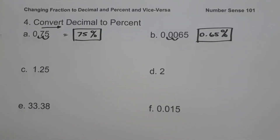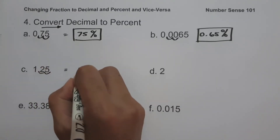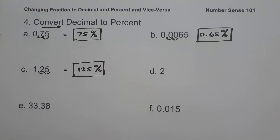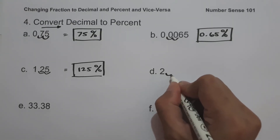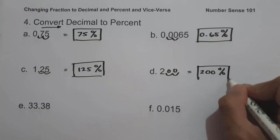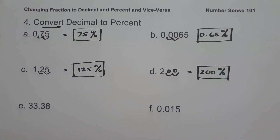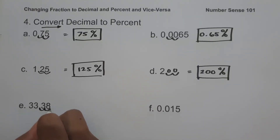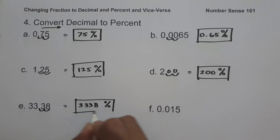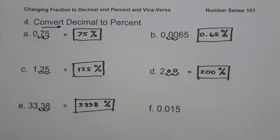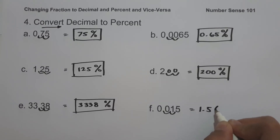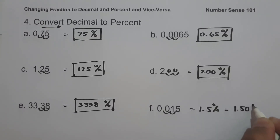On letter C, we have 1.25. Moving two decimal places gives us 125%. On letter D, we have 2. Since this is a whole number, the decimal point is at the end. Moving two places and adding zeros gives us 200%. On letter E, we have 33.38 — moving two decimal places gives us 3,338%. On letter F, we have 0.015 — moving two decimal places gives us 1.5%, or 1.50%.